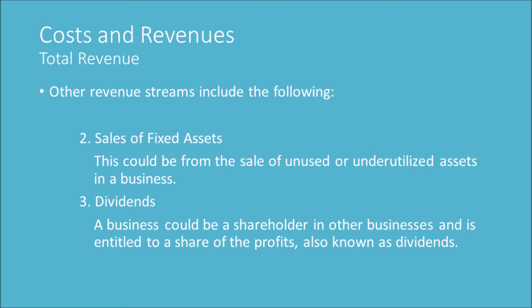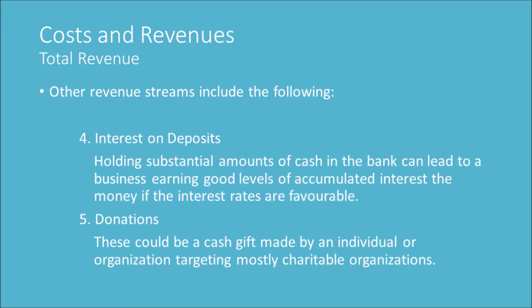2. Sales of fixed assets — this could be from the sale of unused or underutilized assets in a business. 3. Dividends — a business could be a shareholder in other businesses and is entitled to a share of the profits, also known as dividends.